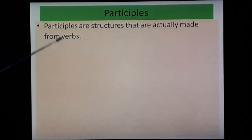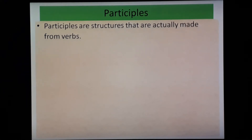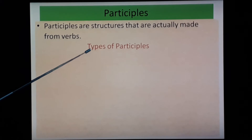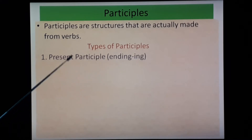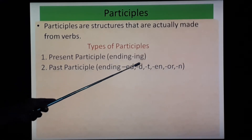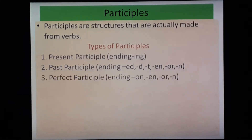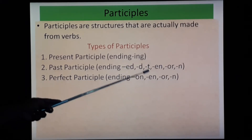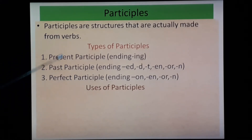Participles are structures made from verbs. Let's see types: first, present participle — ending with -ing; second, past participle — ending with -ed, -d, -en, or -n; third, perfect participle — ending with having plus V3. All these work as an adjective in a sentence, to create verb tenses, and to create passives. Adding -ing to the base form of a verb creates the present participle to show continuous action.